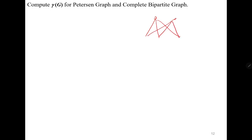Now compute the domination number for the Petersen graph and the complete bipartite graph. For a complete bipartite graph such as K_{2,3}: you can pick one vertex from each side — since each vertex is adjacent to all vertices on the other side, two vertices suffice to dominate the whole graph. So for complete bipartite graph K_{m,n}, γ = 2. For the Petersen graph, it comes out to be three, shown by three red vertices covering all remaining vertices.